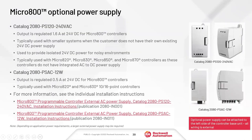The optional power supply slides onto the far left side of the CPU. The base Micro 800s all power up on 24V DC, so if your control power is 120V AC or 240V AC, you can use this optional power supply to bring AC in and output 24V DC to power your Micro 800.